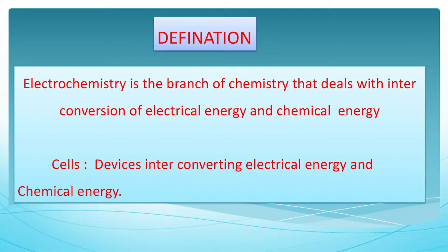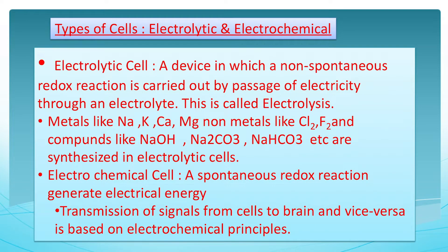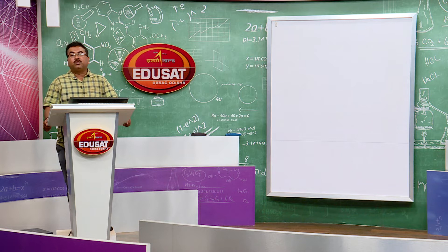The types of cells used are: first, the electrolytic cell. In an electrolytic cell, a non-spontaneous reaction is carried out by the passage of electricity. These have a wide range of applications in preparing highly electropositive metals and non-metals, and compounds like sodium hydroxide, sodium carbonate, and sodium hydrogen carbonate are synthesized using electrolytic cells.